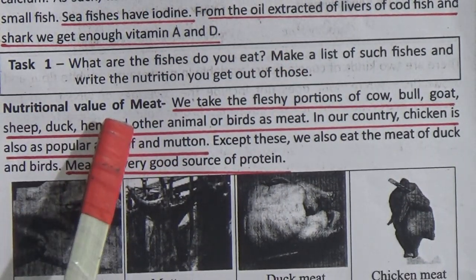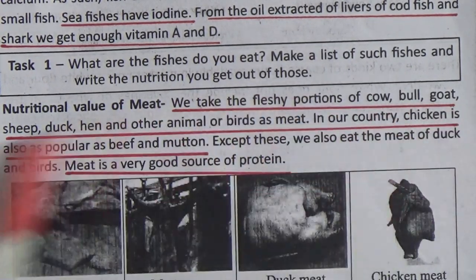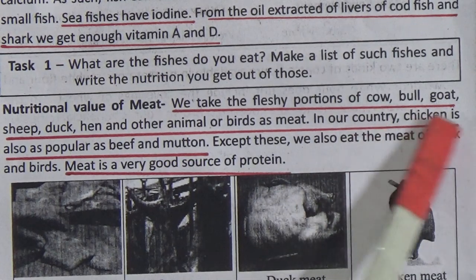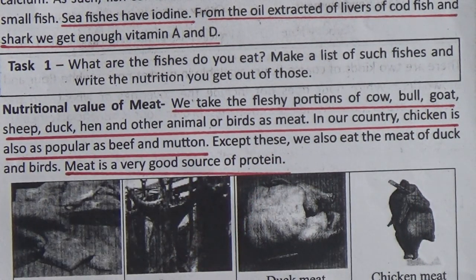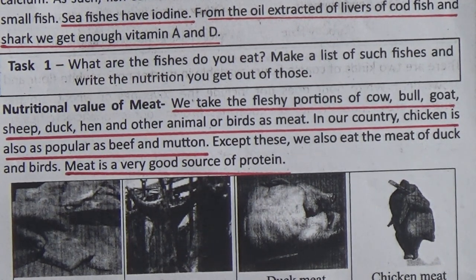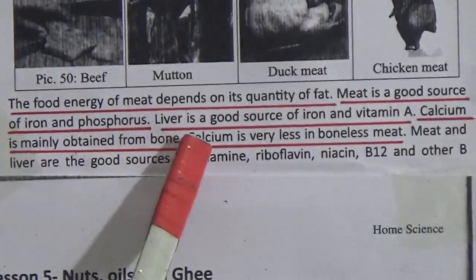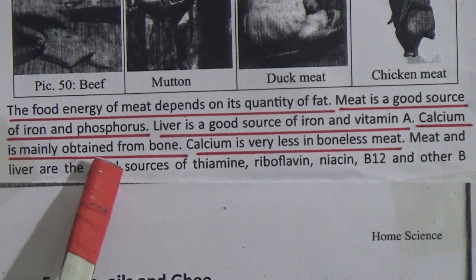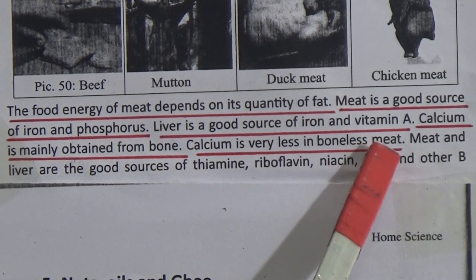Nutritional value of meat. We take protein from the meat of cow, bull, goat, sheep, duck, hen, and other animals and birds. In our country, beef and mutton are also popular. The food energy of meat depends on its quantity of fat. Meat is a good source of iron and phosphorus. Liver is a good source of iron and vitamin A. Calcium is mainly obtained from bone, and calcium is very less in boneless meat.